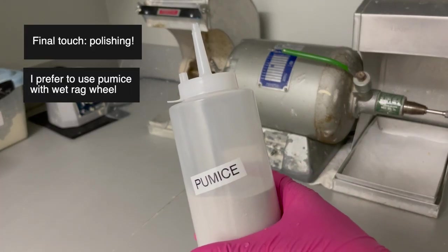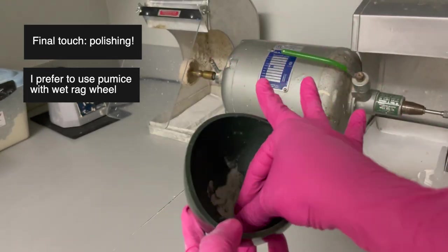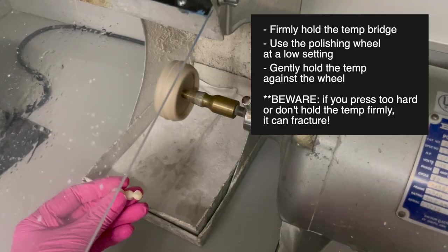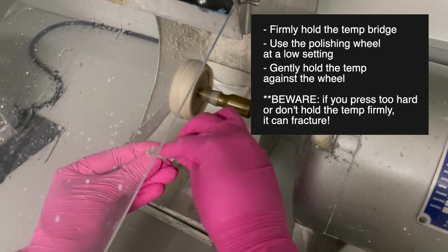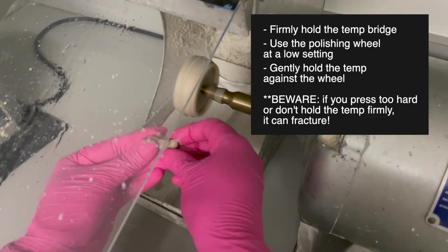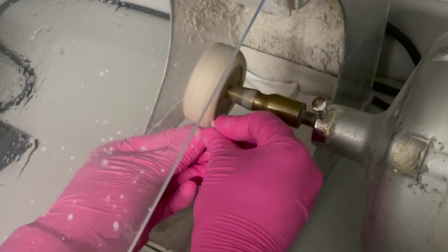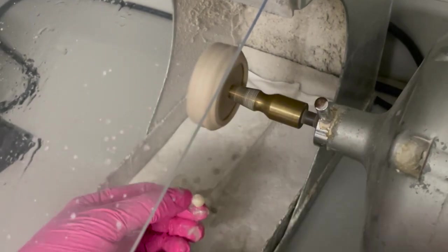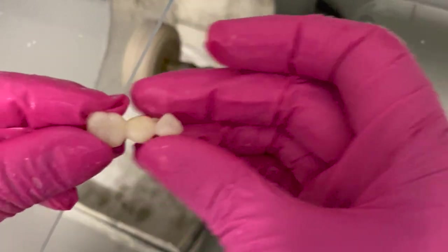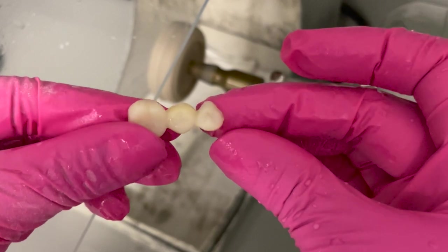Now on to the last step: polishing your temporary bridge. This is especially important for when you're doing anterior bridges. I just basically grab pumice, make it like a little paste, put it on the temp, and run it with your wet rag wheel. It's just gonna smooth everything a little bit. Everything needs to be smooth on the temp, by the way, because the pumice is not really gonna help you with the smoothing. It's just gonna do a little bit and mainly shine it up. Can you tell it's already looking better?